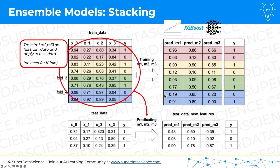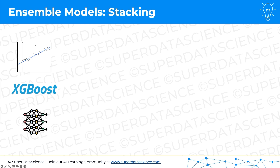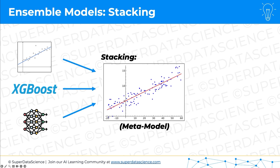To recap: we combine the results of three base models to create and train a meta model — this process is called stacking. Whenever you have a new observation that needs a prediction, you feed its features into each of the three base models to get three predictions. Those predictions become the inputs to the meta model, which produces an overall final prediction for that observation.